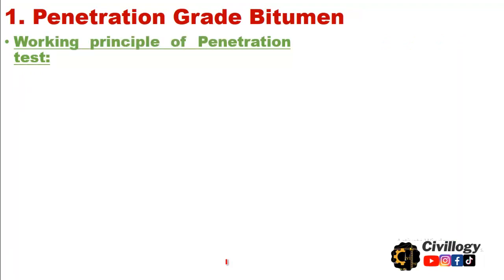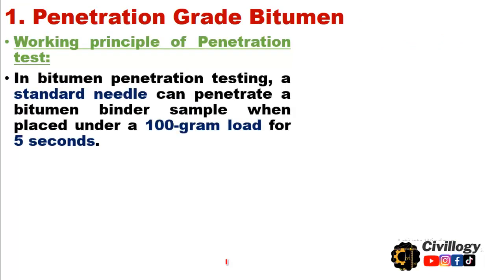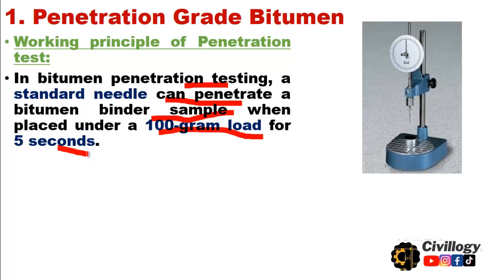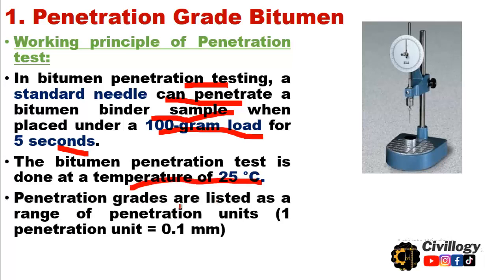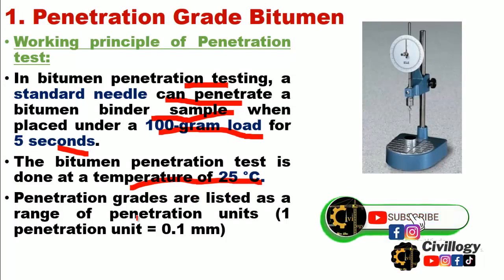So what is the working principle of the penetration test? In bitumen penetration testing, a standard needle penetrates a bitumen binder sample when placed under a 100-gram load for 5 seconds. The bitumen penetration test is done at a temperature of 25 degrees centigrade. The penetration grades are listed as a range of penetration units, where one penetration unit is equal to 0.1 mm.